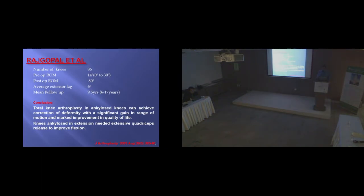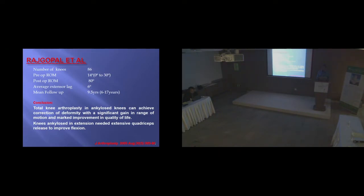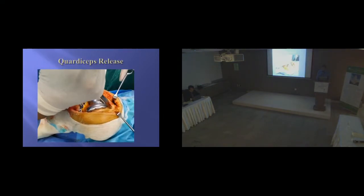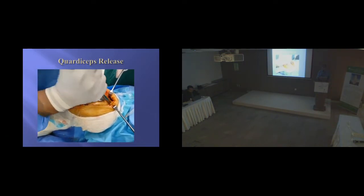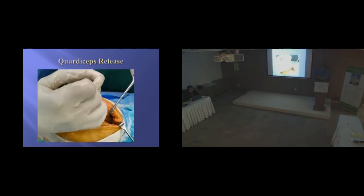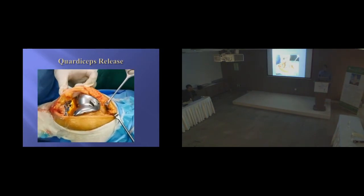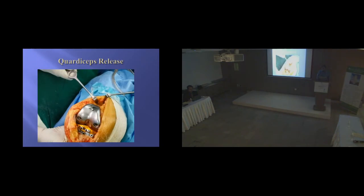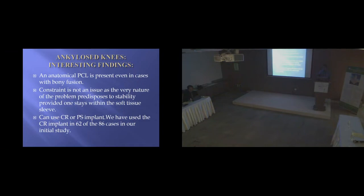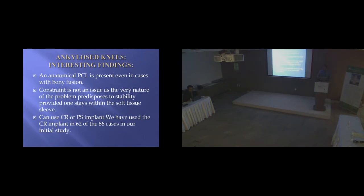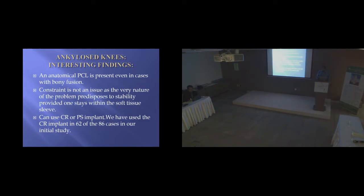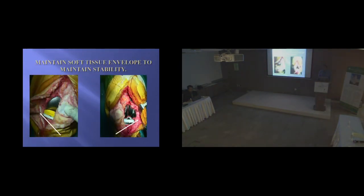About 15 years ago we published results of 86 knees with a mean follow-up of 9.5 years. Knees ankylosed in extension needed fairly extensive quadriceps release to improve function, but the quality of range of movements was maintained over time. For knees ankylosed in extension, we use a technique with a broad osteotome run almost up to the isthmus — about 5 to 6 inches — going subperiosteally to release the quadriceps tendon. Interestingly, as a cruciate-retaining surgeon, most of these knees were treated with CR options, because even in bony ankylosed knees you see the PCL vestige. In our cohort, 62 of the 86 — almost 74% — were CR knees.